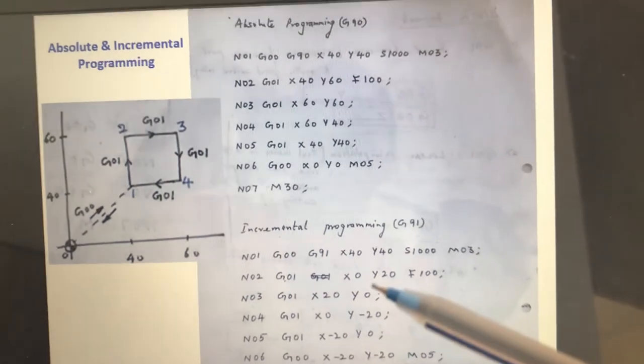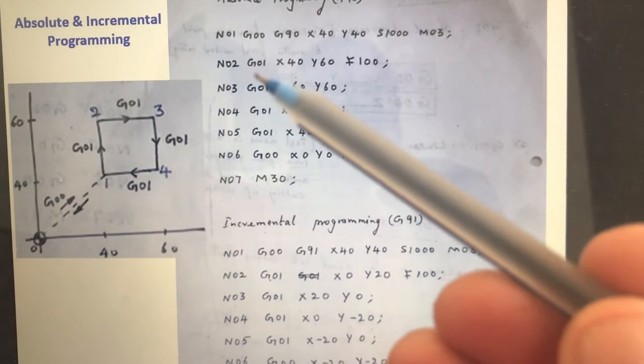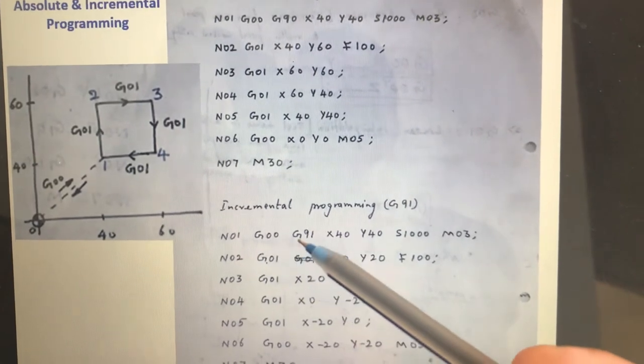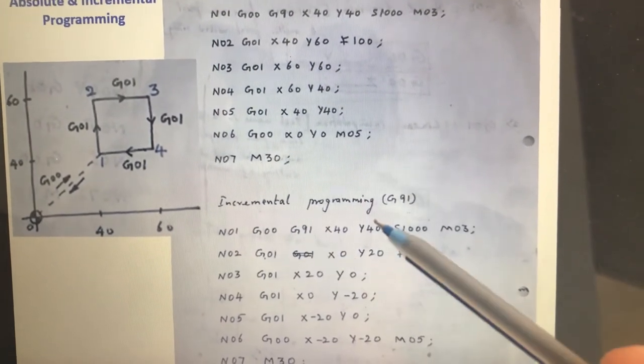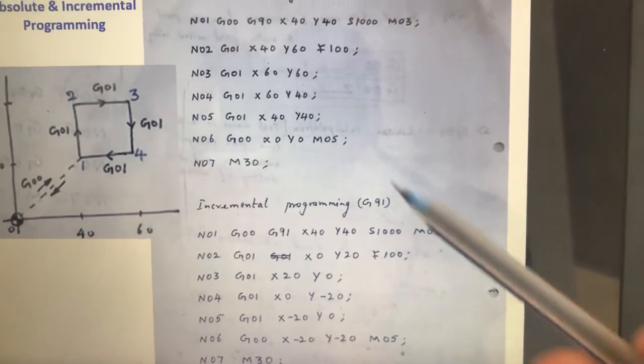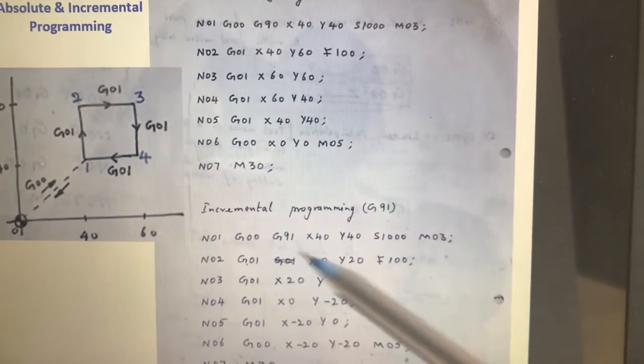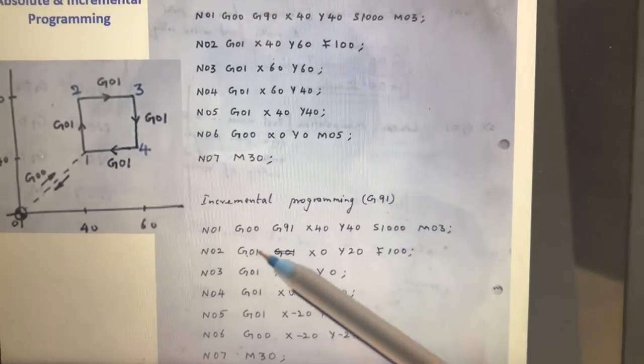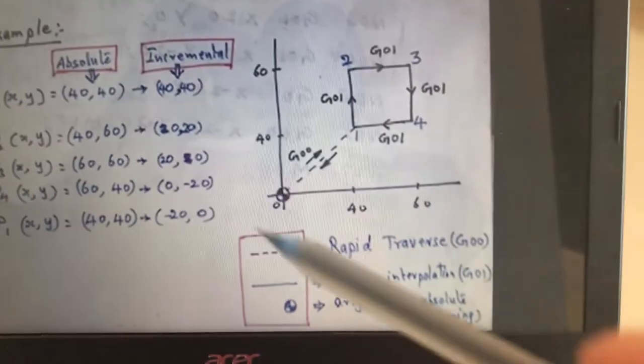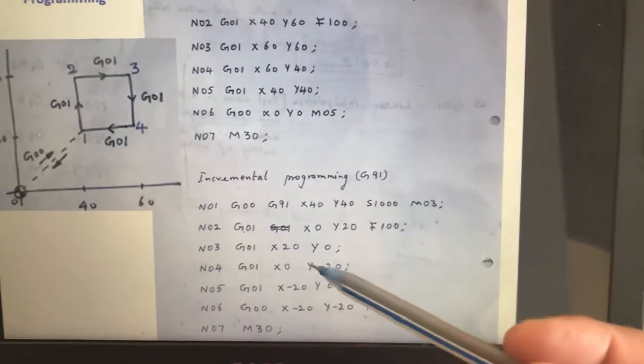Now, the same thing repeats here. We are doing incremental programming. I have taken here G00, G90, meaning absolute programming. But here I have taken G00, G91. 91 means incremental programming. G91 means incremental programming. And other values look same. X40, Y40, S1000, and M03. Everything is same. G01 is the same, but the XY value will change as we found in the previous slide.